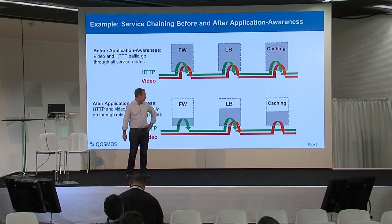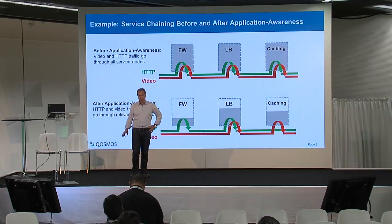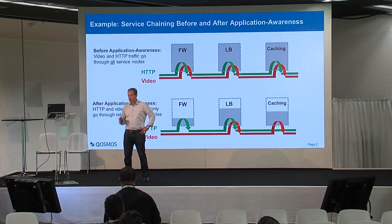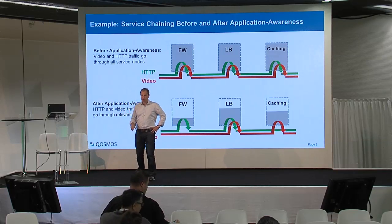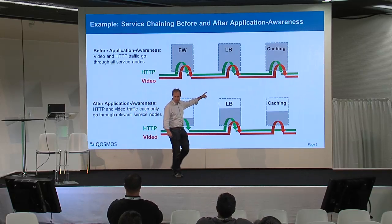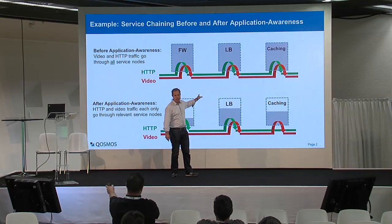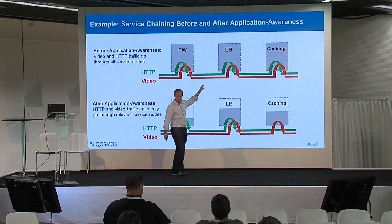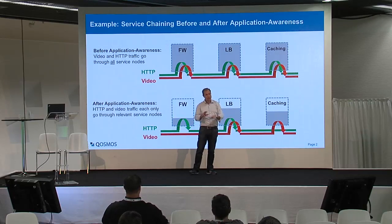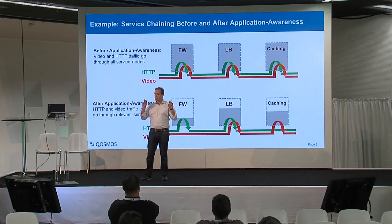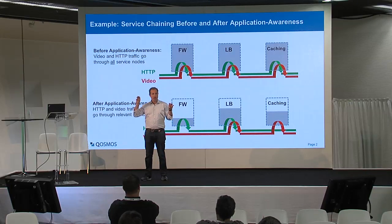Let's start with a quick definition of what we mean by application-aware service chaining. If you look at a regular network, you will find a long chain of middle boxes — typically on a GI LAN or even in a data center. You will find firewall, load balancer, caching, and in a typical network, you have this long chain of devices.